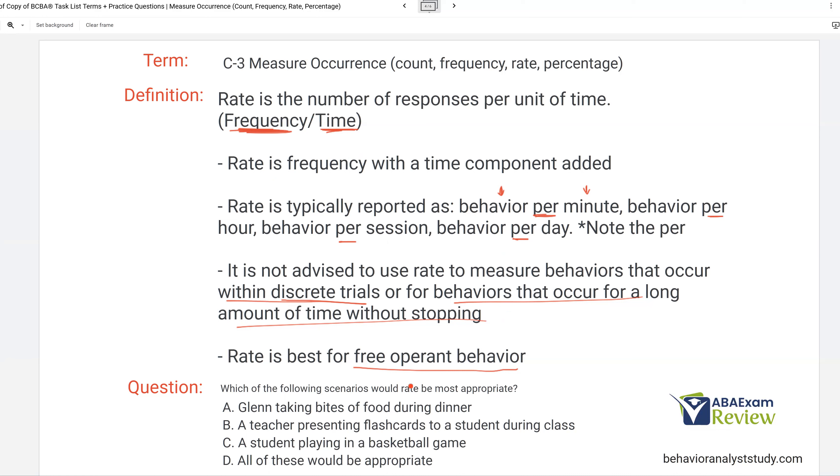Which of the following scenarios would rate be most appropriate? A, Glenn taking bites of food during dinner. Sure, we could count how many bites of food he takes per dinner. A seems pretty good. B, a teacher presenting flashcards to a student during class. Well, these are going to be like discrete trials, and we want to avoid rate with the discrete trials as much as possible. C, a student playing in a basketball game. That would be a behavior that occurs for a long amount of time without stopping. So the best scenario is going to be Glenn taking bites of food during dinner.